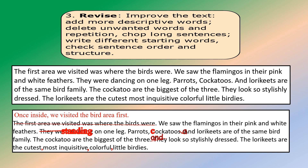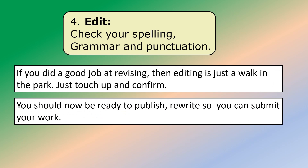Let's see how to improve this. 'Once inside, we visited the bird area first.' You can change it — it's your essay — but this is one way to make it flow from paragraph one to paragraph two. 'We saw the flamingos in their pink and white feathers, standing on one leg. Parrots, cockatoos, and lorikeets are of the same bird family. The cockatoos are the biggest of the three and look so stylishly dressed. The lorikeets are the cutest, most inquisitive, colorful little birdies.'